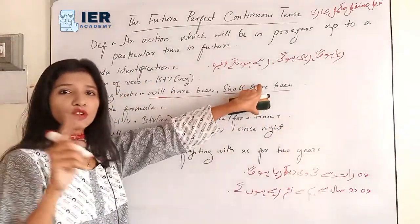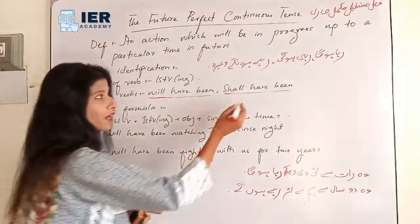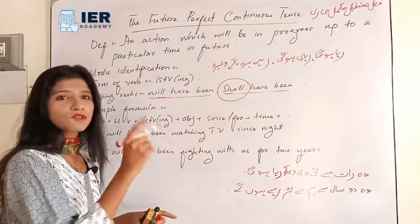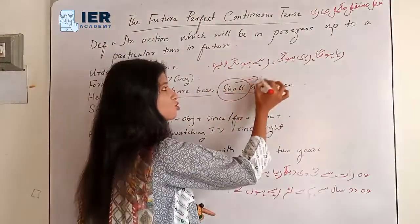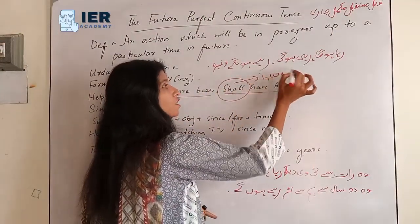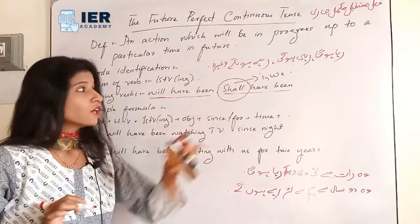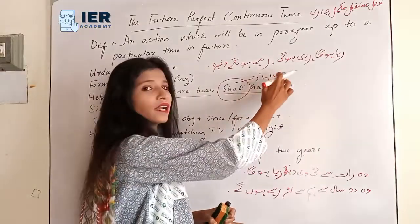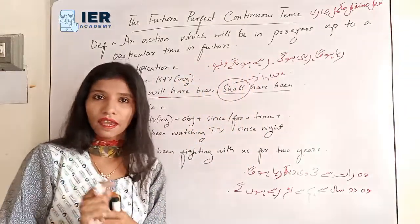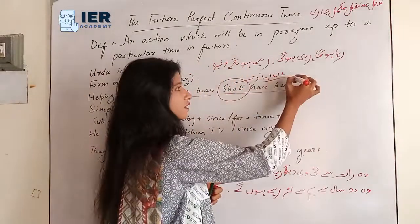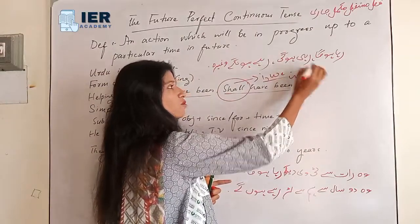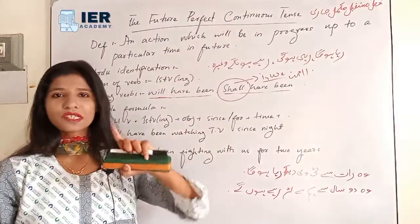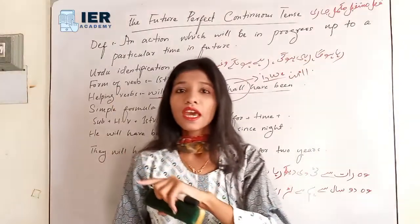The helping verbs for Future Perfect Continuous Tense are: will have been and shall have been. We have studied 'shall' before — in modern English it is mostly neglected, but if we use it, we can use it only with 'I' and 'we'. So shall have been is used only with I and we, and using 'will' with I and we is also not wrong.